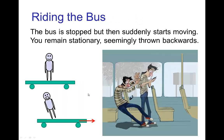A more common example of this would be if you're riding on the bus, and the bus is sitting at a stoplight so it's not moving, but then it suddenly starts moving quickly — it accelerates. Well, you will remain stationary at rest until there's a force acting on you. So in this case, it seems as if you are thrown backwards as the bus moves out from underneath you.